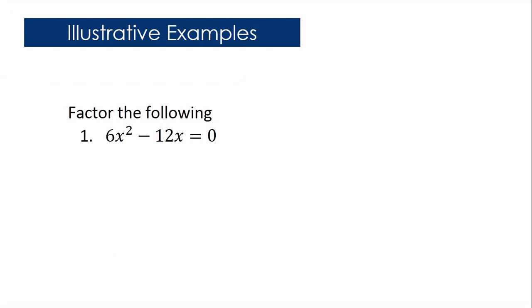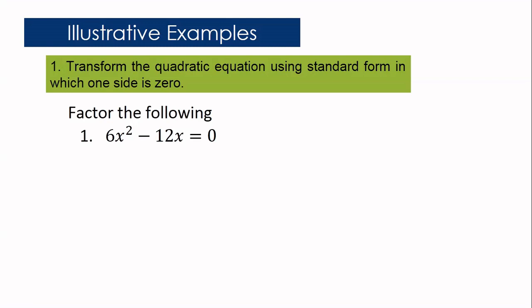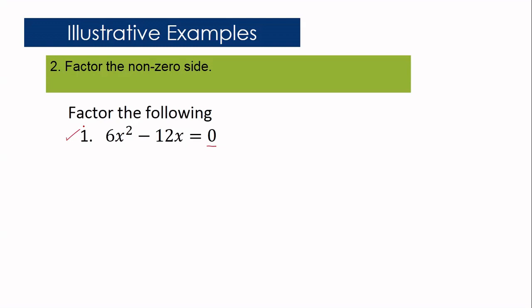Example 1: 6x squared minus 12x equals 0. Step 1: Transform the equation so one side equals zero. As you can see, the right side is already equal to zero, so we are done with step 1. Step 2: Factor the non-zero side, which is 6x squared minus 12x. Using common monomial factor, the greatest common factor is 6x and the binomial is x minus 2. The factors are 6x times x minus 2 equals 0.